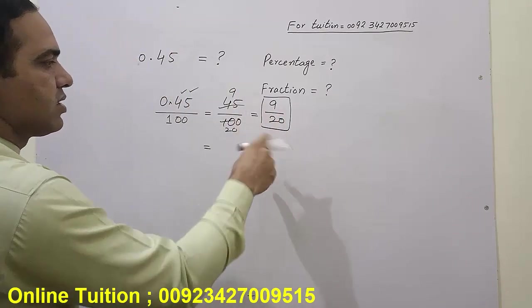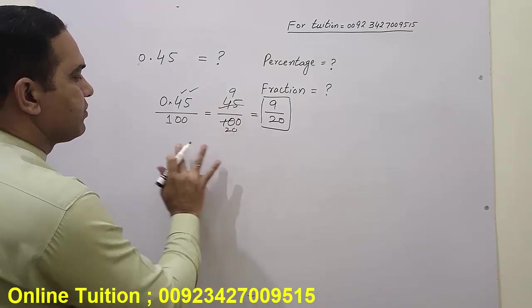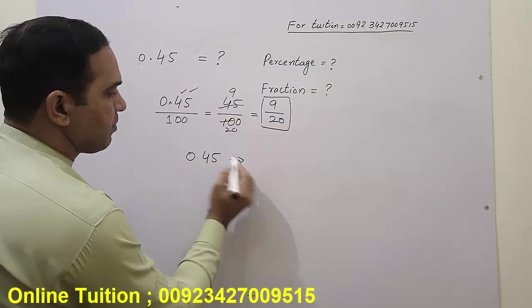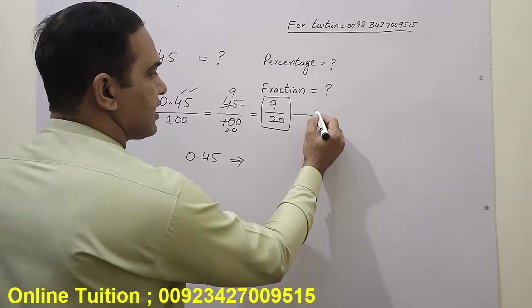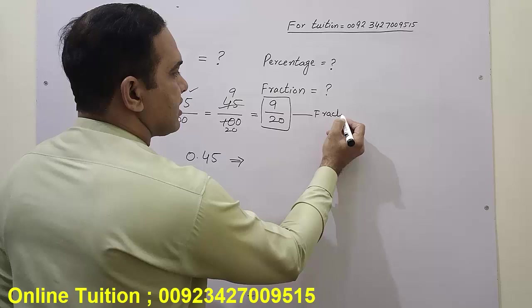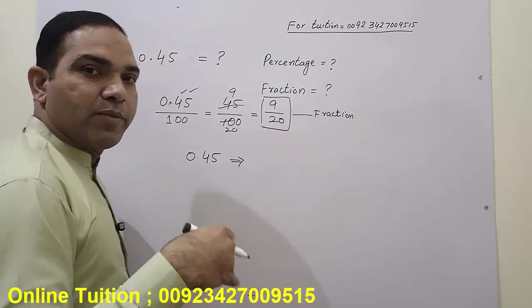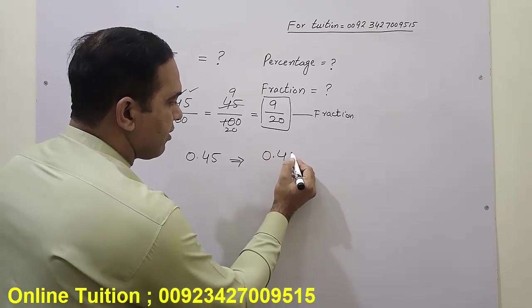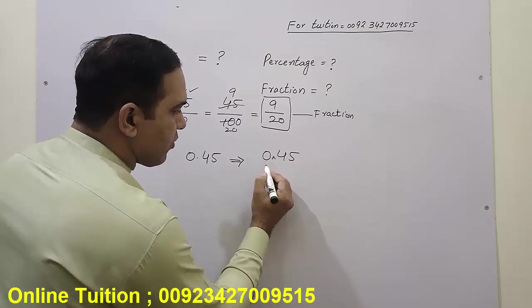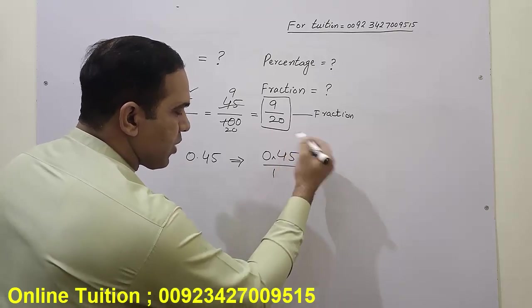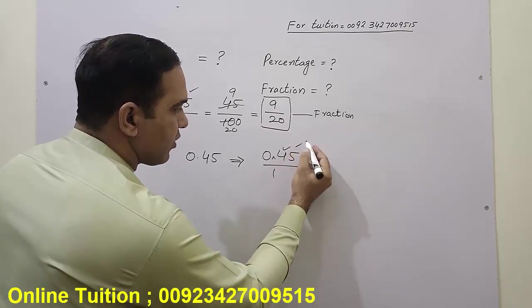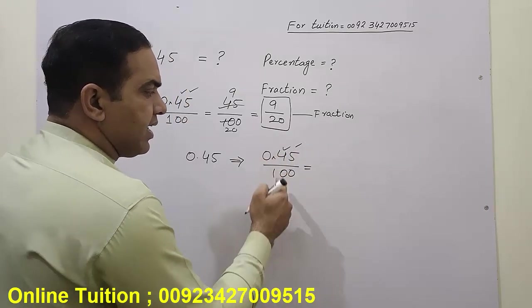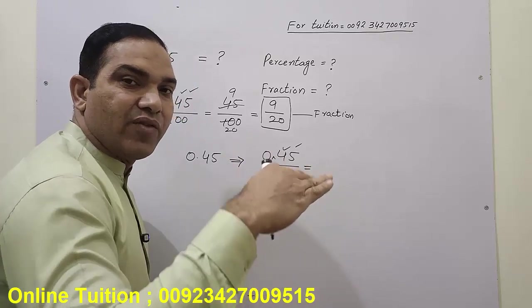Now 0.45 written as percentage. This is a fraction, the simplest fraction. Now I'm going to write it as percentage, so the same rule applies here. Remove the point, write one. After the point, how many digits are there? One, two. Put two zeros.